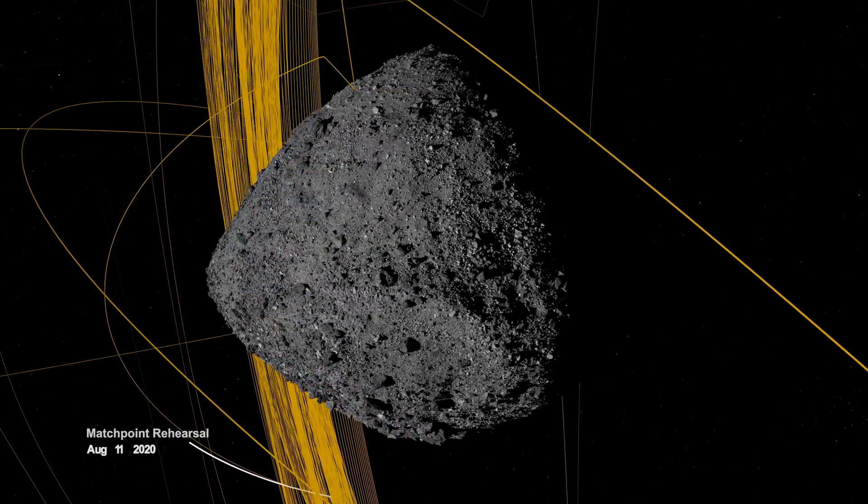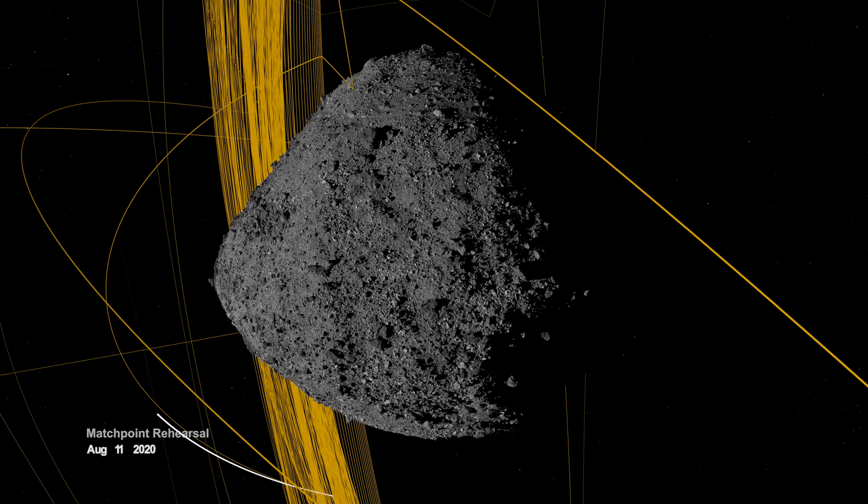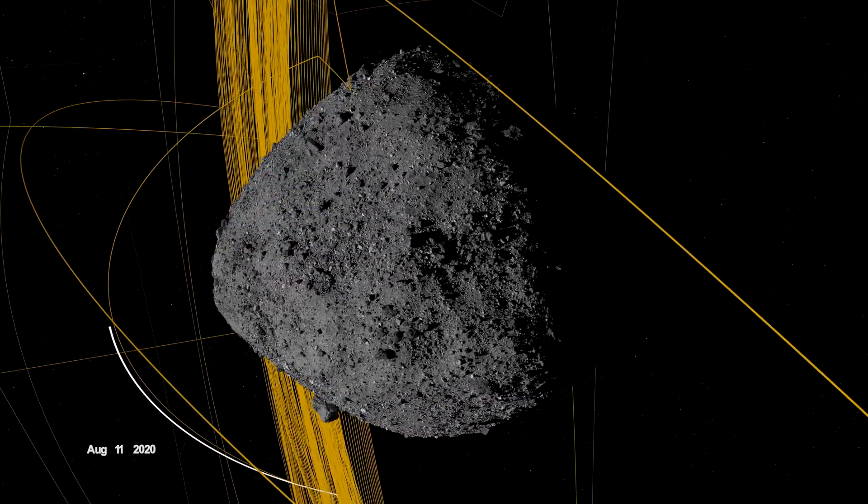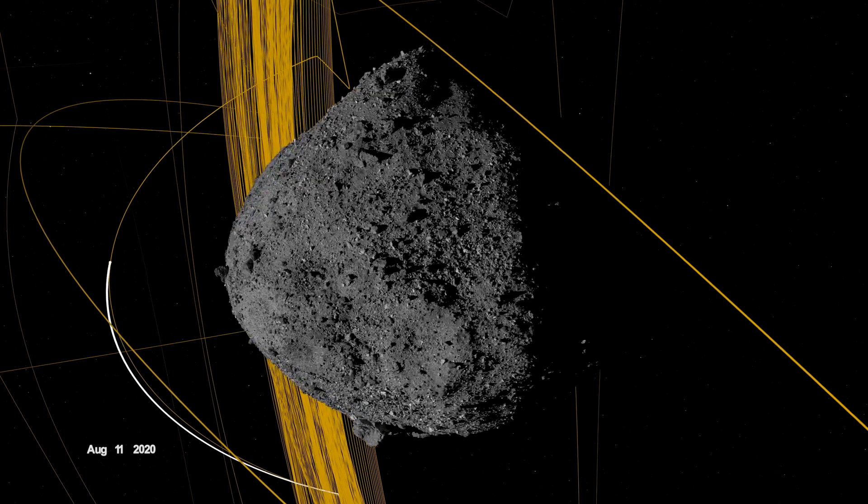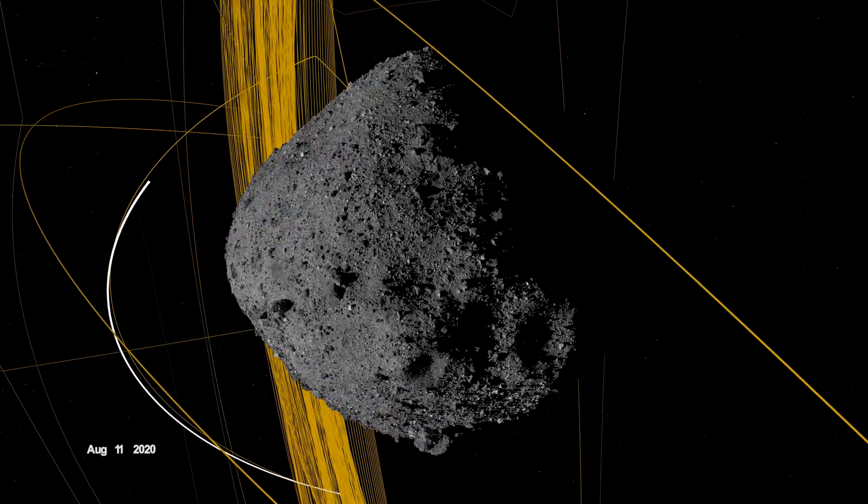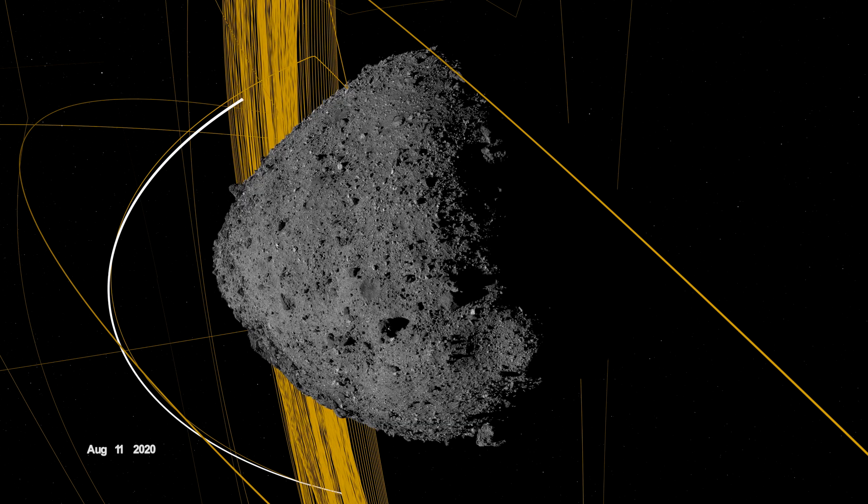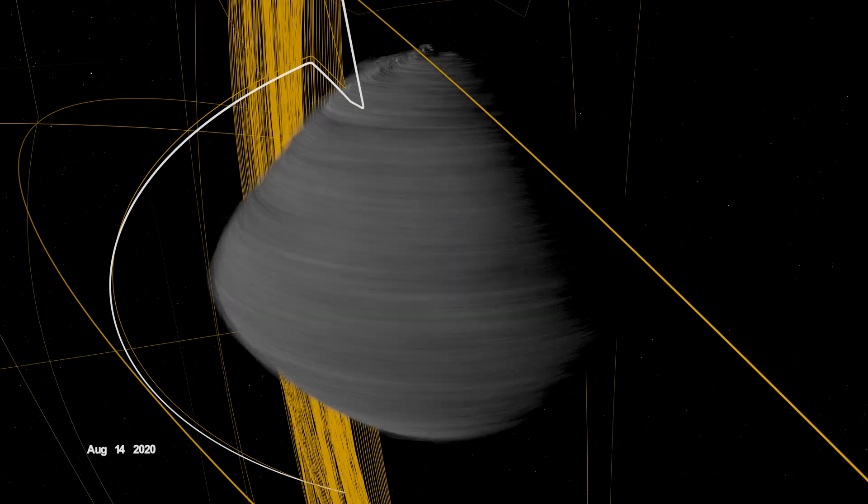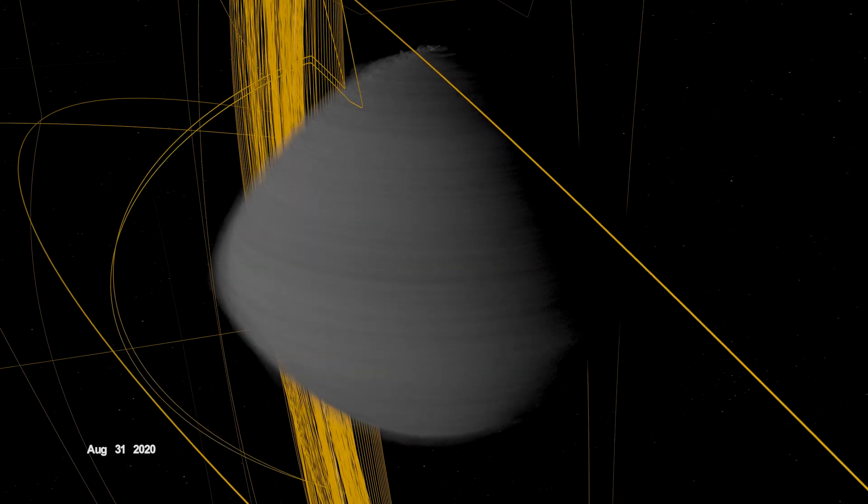On August 11th, OSIRIS-REx departed its home orbit and made a four-hour traverse to Bennu's northern hemisphere, retracing its earlier path. After performing the checkpoint engine burn to begin its descent, it made a second engine burn called Match Point to match Bennu's rotation before backing away at an altitude of approximately 40 meters.